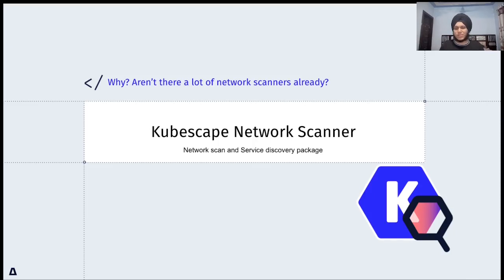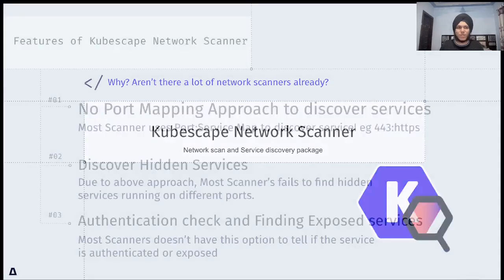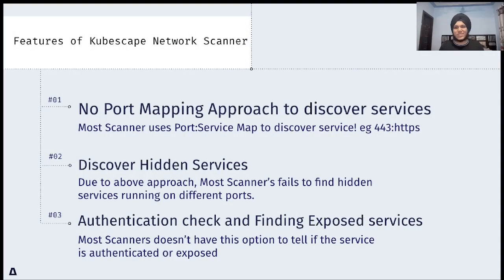Network scanning is really essential — we saw what can happen if an attacker gains a shell inside a container. It's really dangerous and could happen because of misconfigured or vulnerable services running inside containers. So here comes the KubeScape network scanner, which is a network scanning and service discovery package. The question arises: why do we need KubeScape network scanning when there are already a lot of network scanners in the market? What makes KubeScape network scanner really different from them?